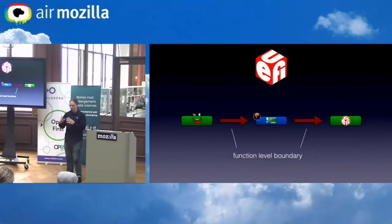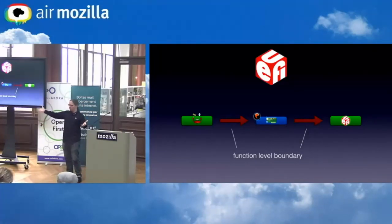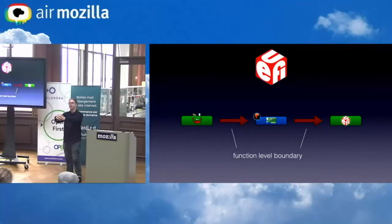Imagine code that is half one architecture and half another architecture, and you just link them together — this is basically what this does.